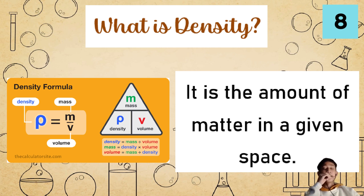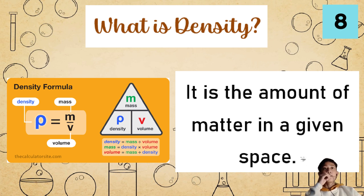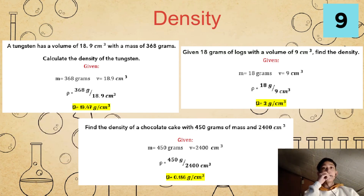What is density? Density is the amount of matter in a given space. The density formula is: density equals mass over volume. It is indicated that when finding density, density equals mass divided by volume. When finding mass, we use mass equals density times volume. And when finding volume, we use volume equals mass over density.